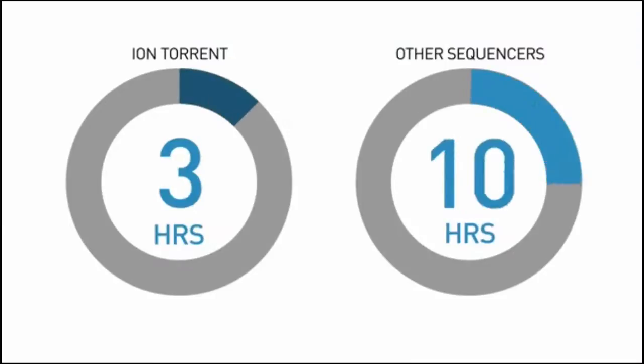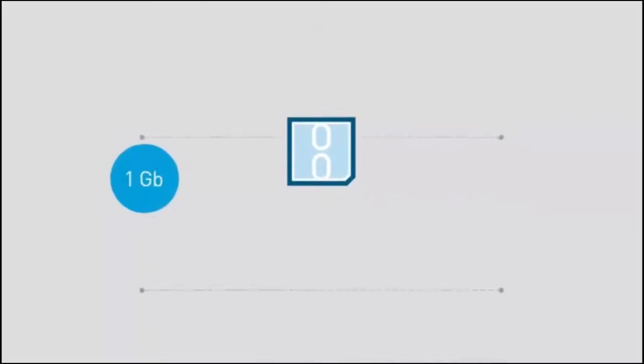So regardless of whether you're using a chip with one million wells or one billion, the sequencing process takes only a few hours, a fraction of the time that it would take for traditional light-based sequencers. This process is also massively scalable. In just two years, chip output has increased a thousand-fold, with potential to increase even more in the future. By combining a simple chemical process with proven semiconductor technology, Ion Torrent's systems simplify sequencing, making it faster, more scalable, and more accessible.